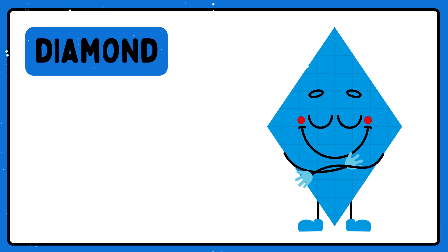A diamond. This is a diamond. A diamond has four sides, four corners and a diamond face.